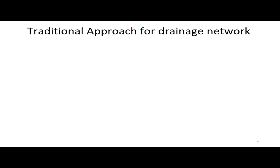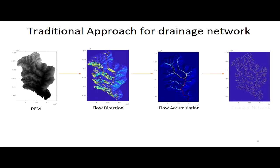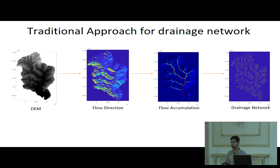What is the traditional approach for drainage network extraction? Let's say that we have a sub-basin. The first step is to generate the flow direction for each grid cell of the digital elevation model. Based on those flow direction values, we extract the flow accumulation values for each grid cell. Then we apply a threshold value, and based on that threshold we extract the drainage network for any particular basin.